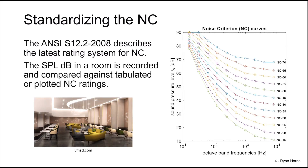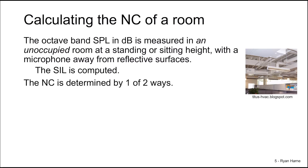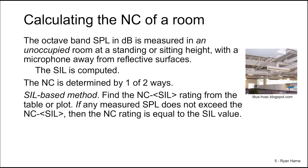We see the ratings as shown here on the right. We calculate the NC of a room by measuring the octave band SPLs in decibels. The room must be unoccupied, and the microphone should be placed away from reflective surfaces at around a sitting or standing height. The speech interference level is first computed. We then determine the NC of the room by one of two ways. First, we use the speech interference level method — we find the NC-SIL rating from the table or plot. If there are no measured SPL readings that exceed the NC-SIL rating, then the NC rating of the room is equal to the SIL value.